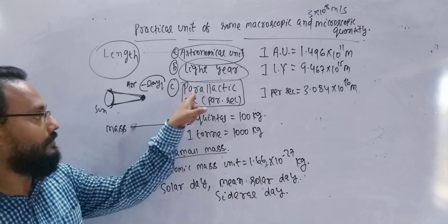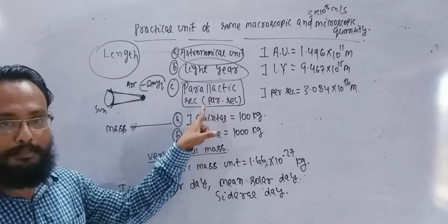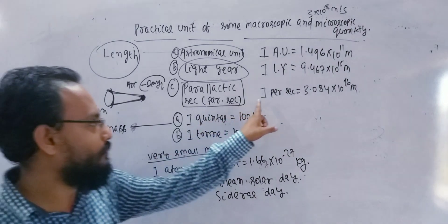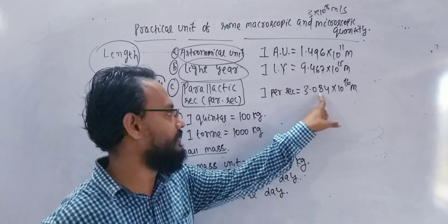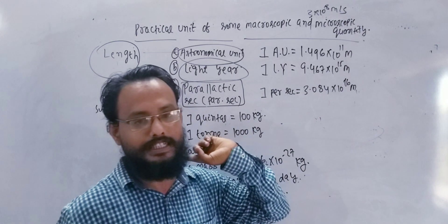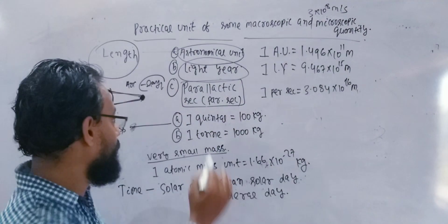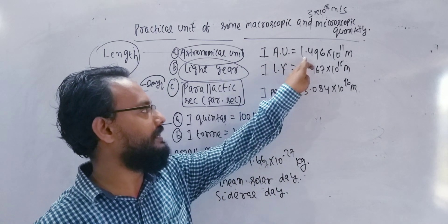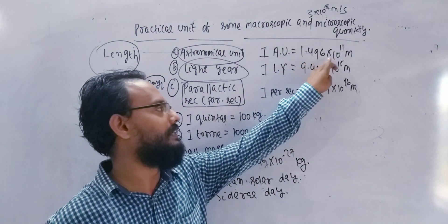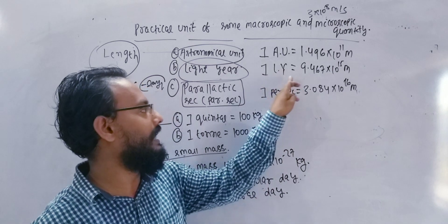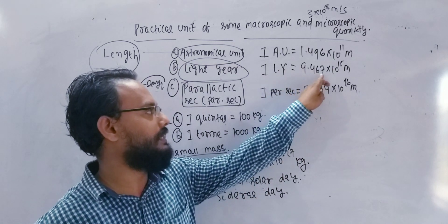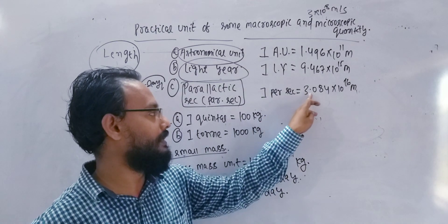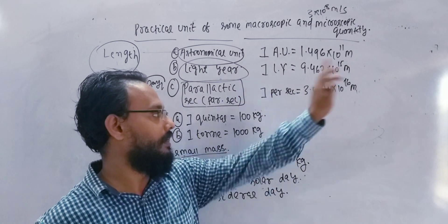This length is 15 seconds per second. The length per second is 3.084 x 10 to the power 16 meters. One astronomical unit is equal to 1.496 x 10 to the power 11 meters. One light year is equal to 9.467 x 10 to the power 15 meters. One parsec is equal to 3.084 x 10 to the power 16 meters.